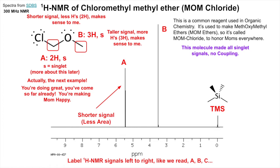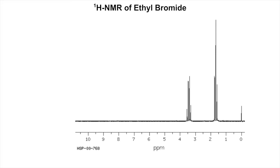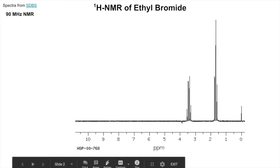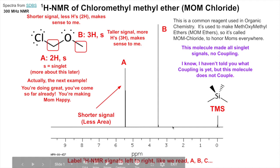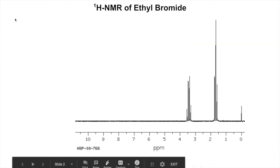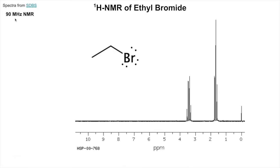This molecule made all singlet signals and had no coupling. Now this is a proton NMR, H-1 NMR, of ethyl bromide from SDBS as well. This one was done on a 90 megahertz NMR - about the same strength as ours. You can see the baseline here - it's not as flat and smooth, it's a little bit rough. That's because it's not as strong an NMR; if this were a 300 megahertz NMR, it would be smoother.